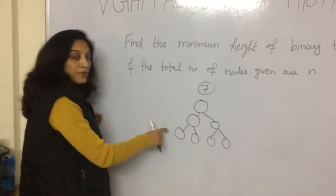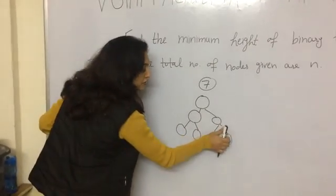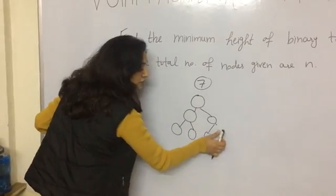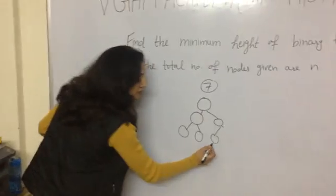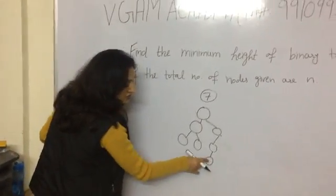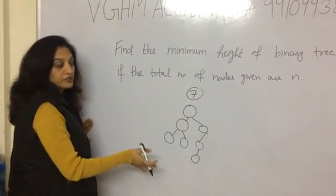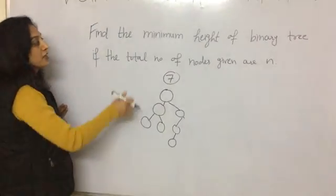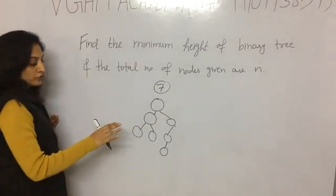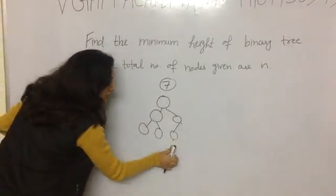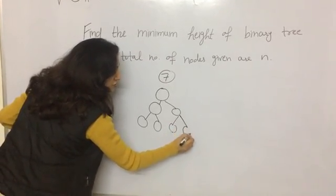If I wouldn't have put the maximum number of children for each node — say if instead of 2 I had put only 1 — I would have had to put the rest at the next level. That would increase the height by 1, which I don't want because the question asks for the minimum height. So to keep the height minimum, I have to put the maximum children for each node.